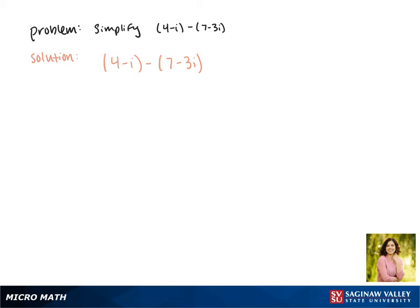Since we're subtracting here, let's rewrite this as 4 minus i minus 7 plus 3i, because we're subtracting a negative. Combining the real parts gives us negative 3, and negative i plus 3i gives us 2i. This is as simplified as we can make the expression.